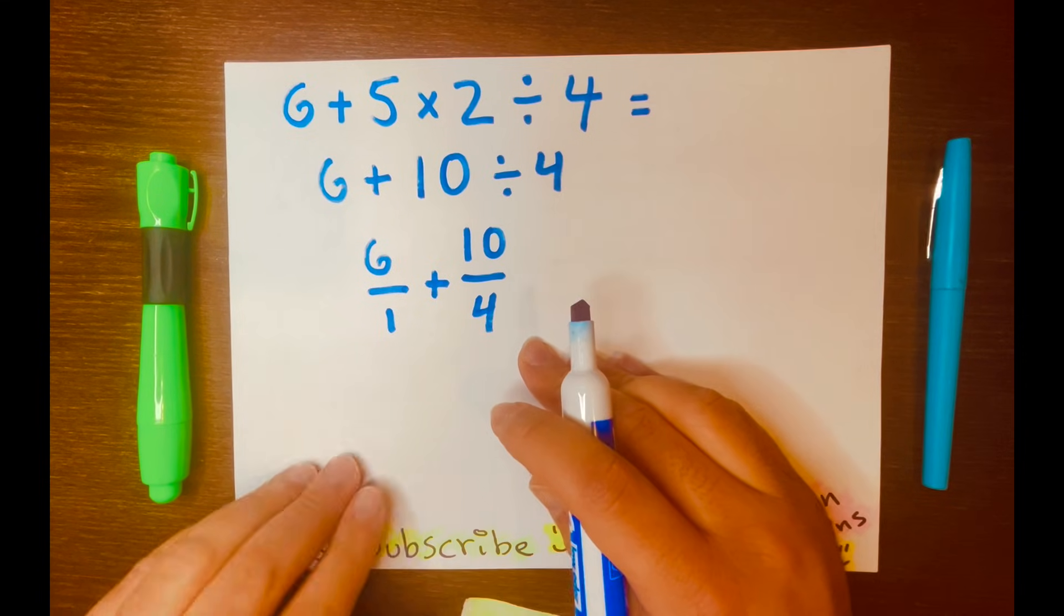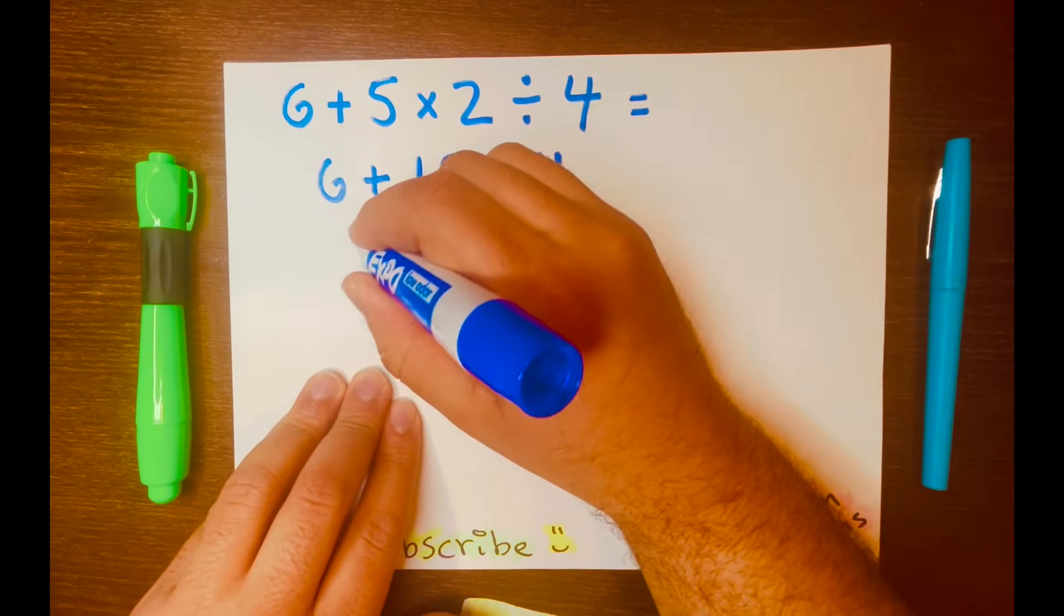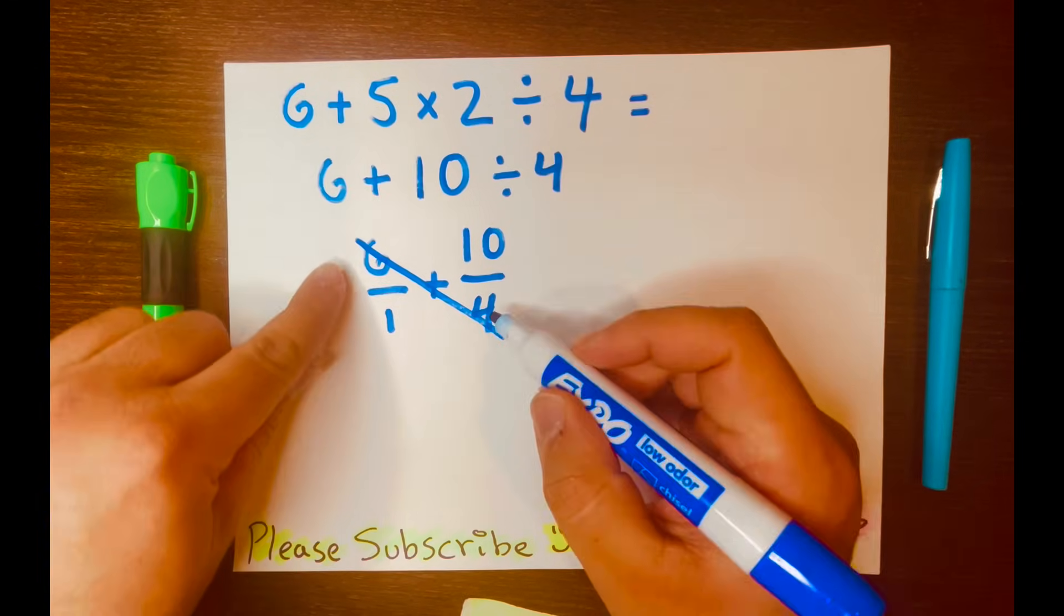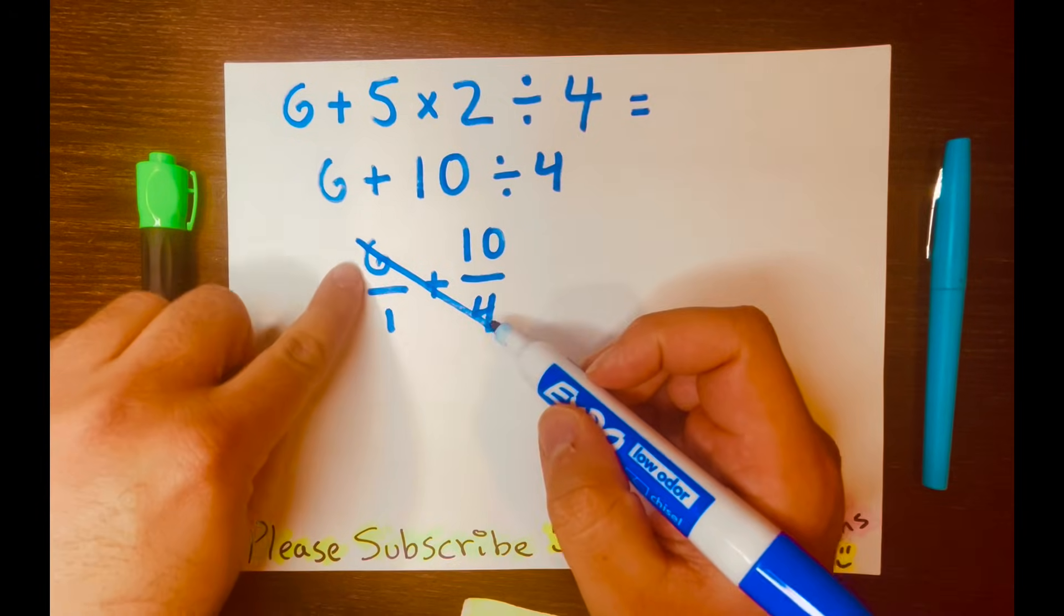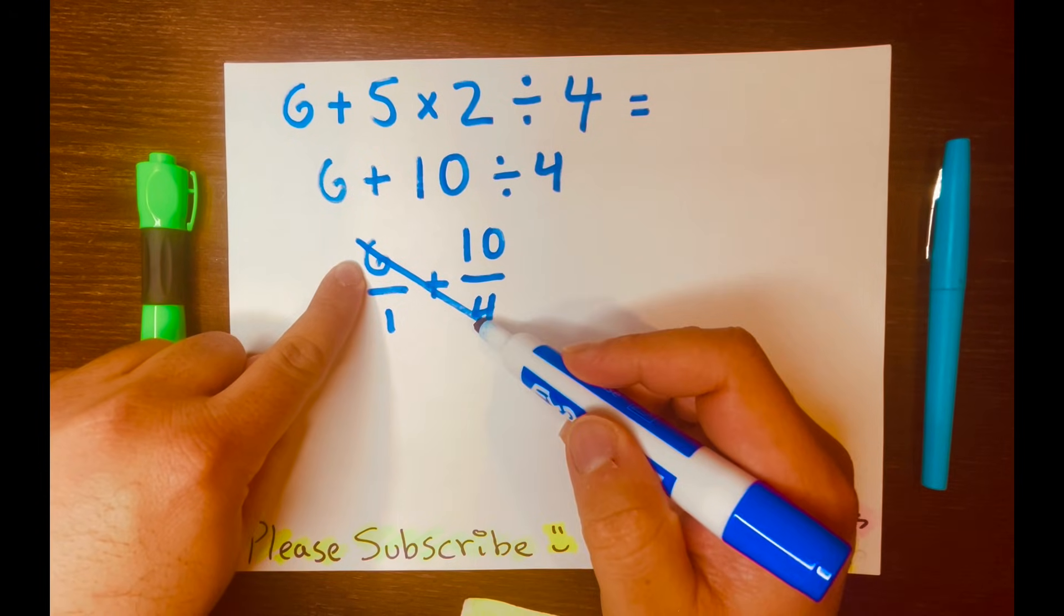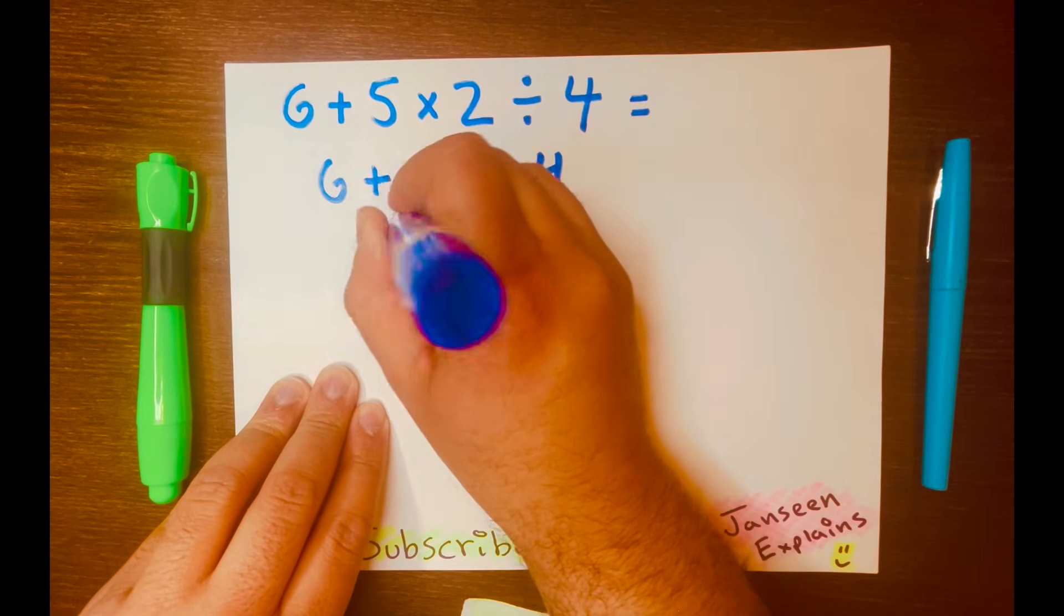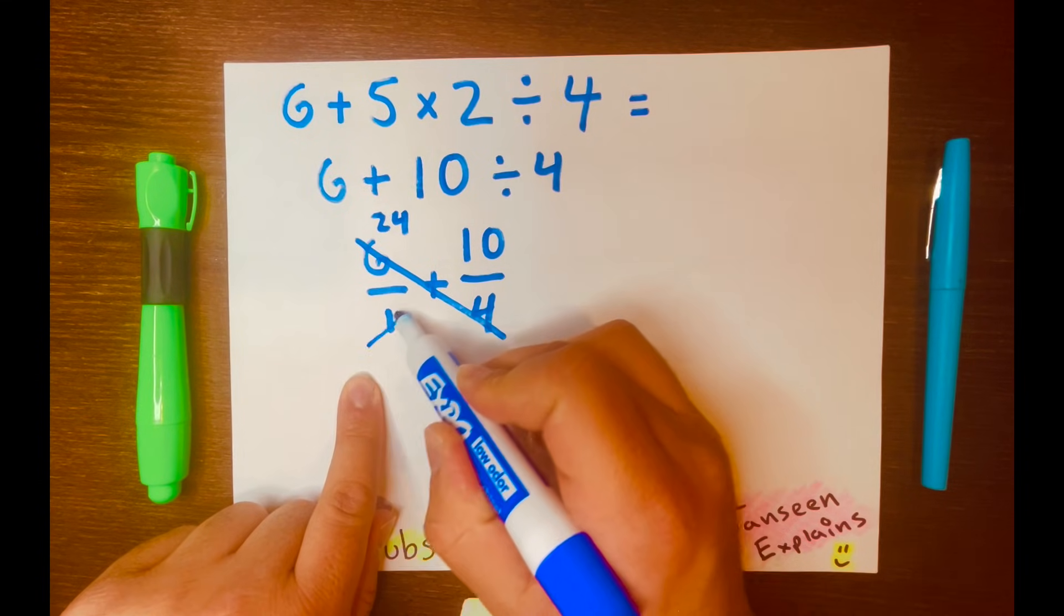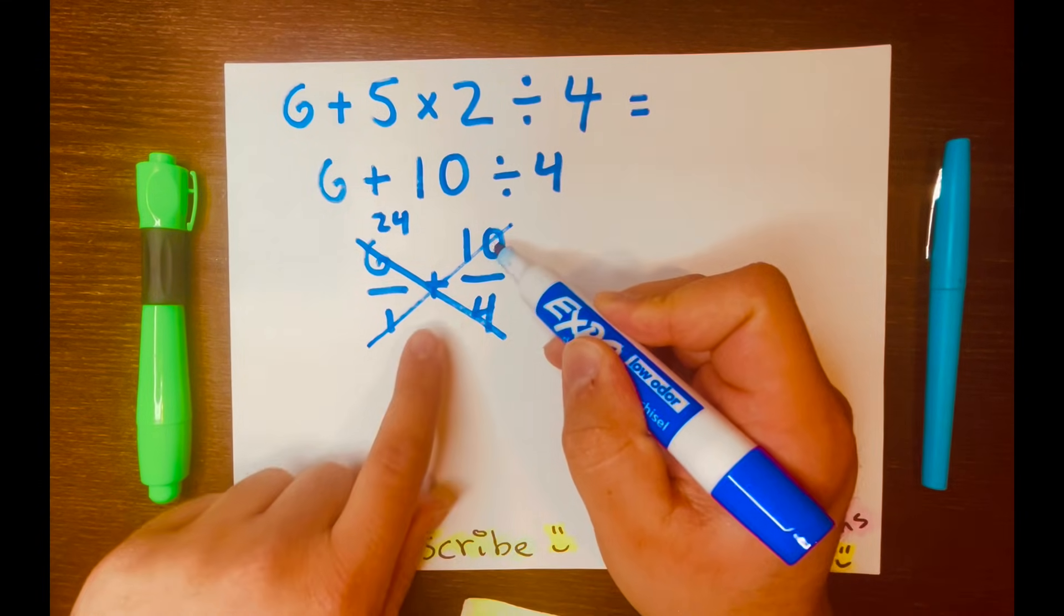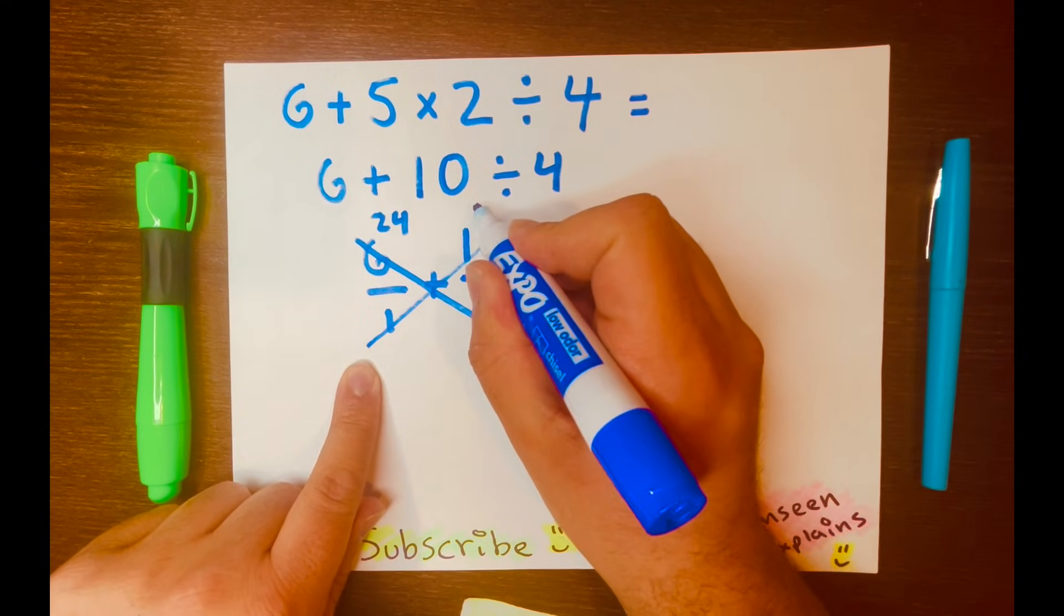We're going to use this method called the butterfly method, where I am going to multiply these two numbers, so we're making the wing. Let's do that. So 6 times 4 is 24, so I'll write the 24 up here, 24.